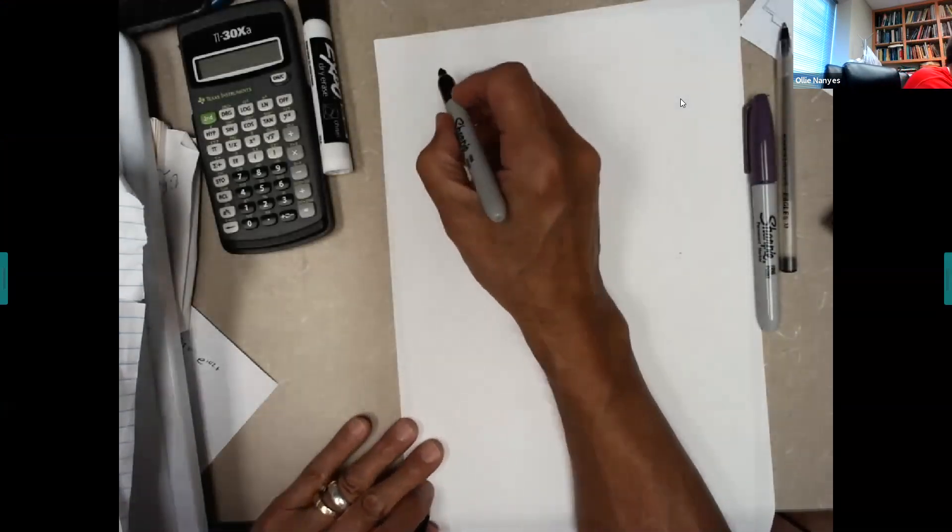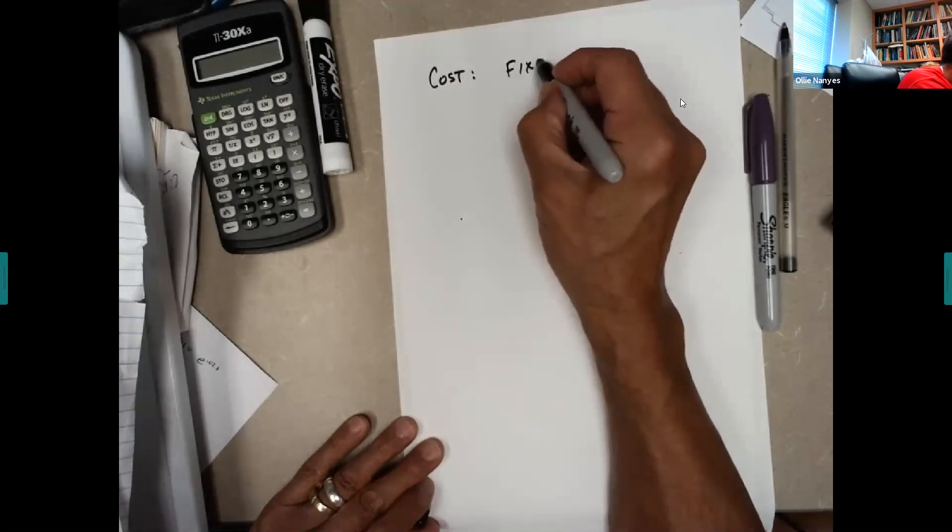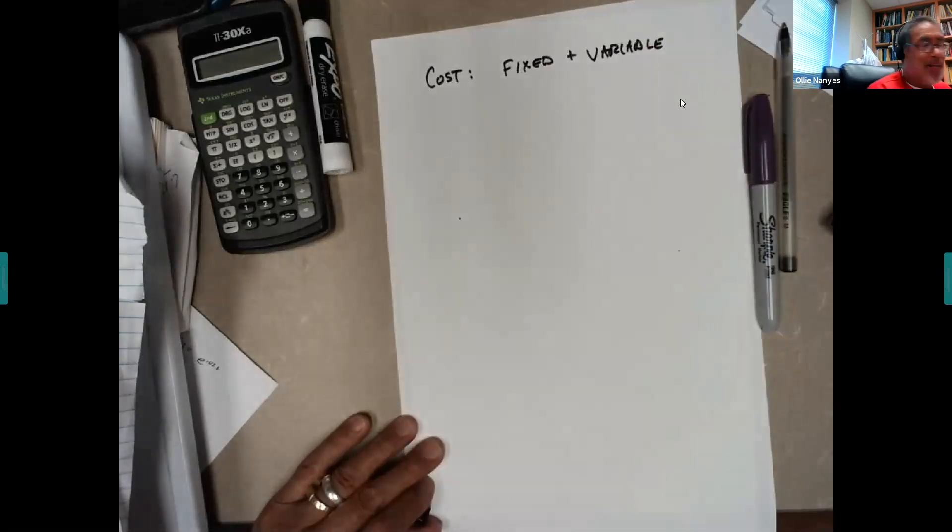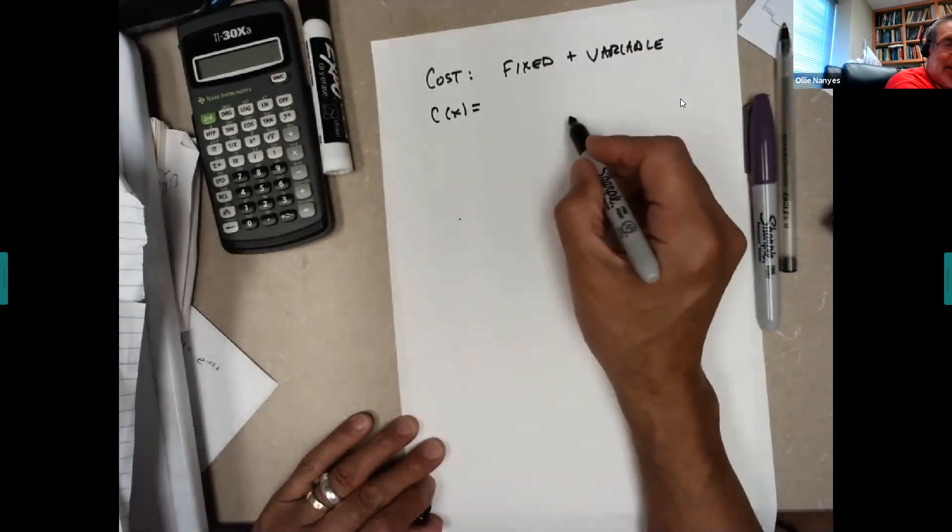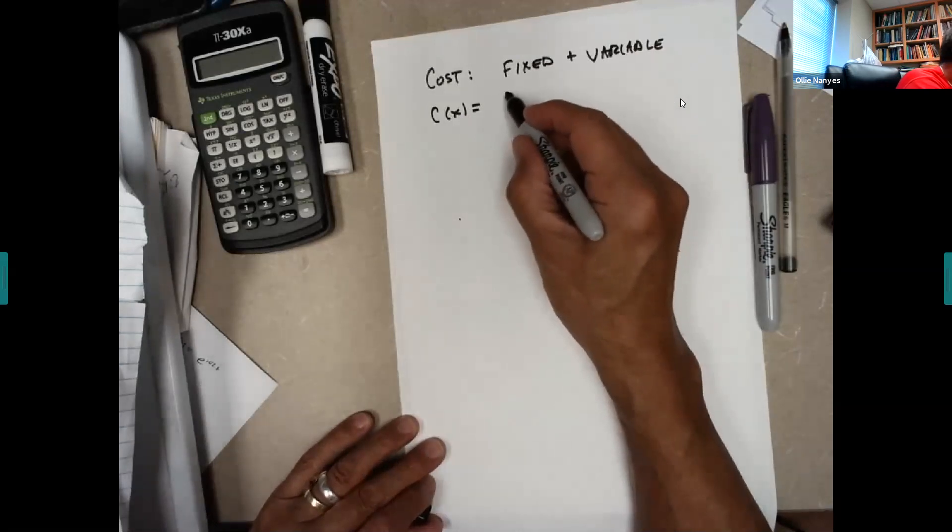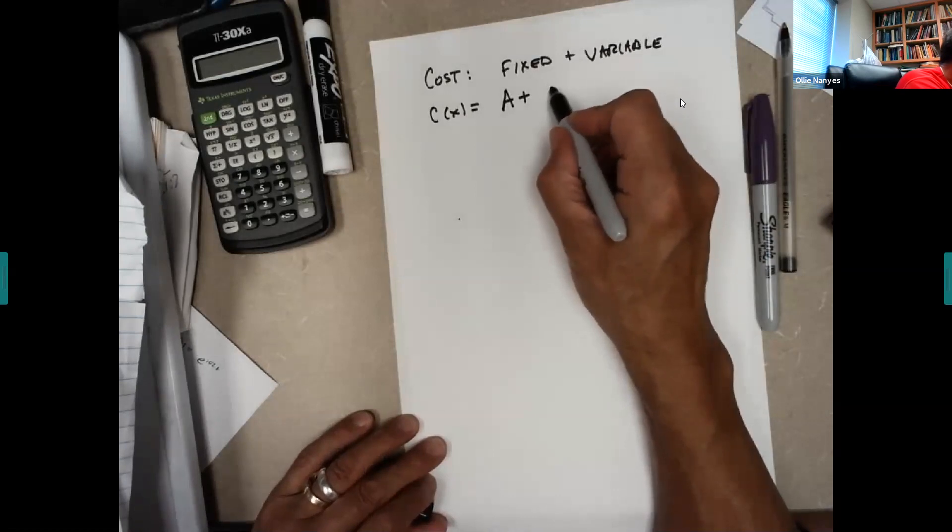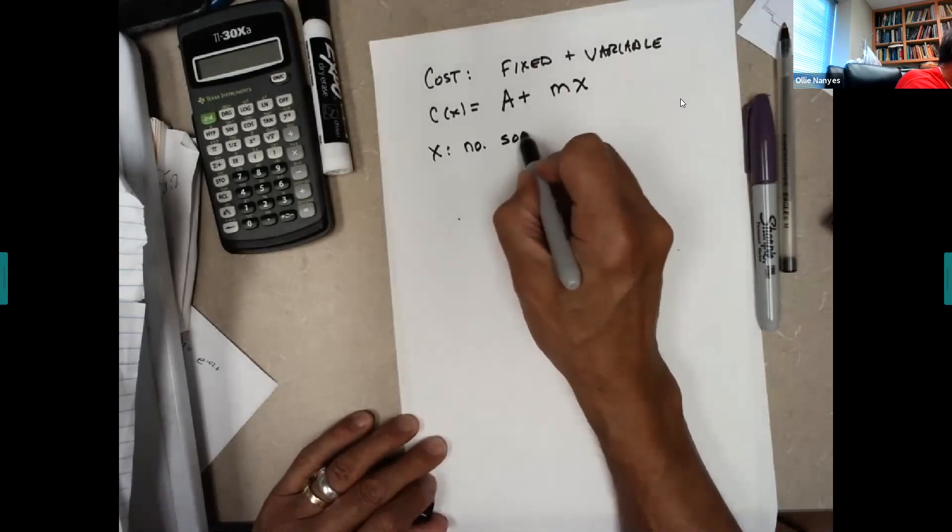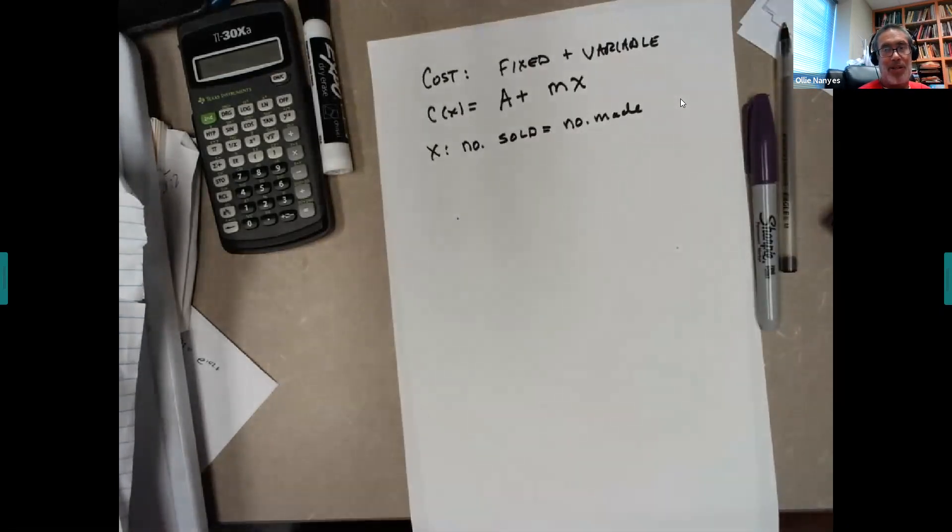So for the cost function, it will be fixed plus variable. And the way we're going to label that, this will be C of X is equal to the fixed cost, which I'll just call some number A, plus variable cost. I'm just going to call that M times X, where X is a number sold, which is equal to number made. So X is how many items and that's how much it costs.